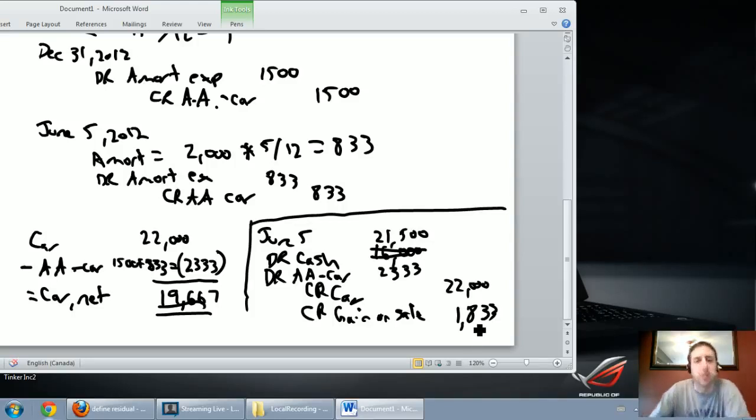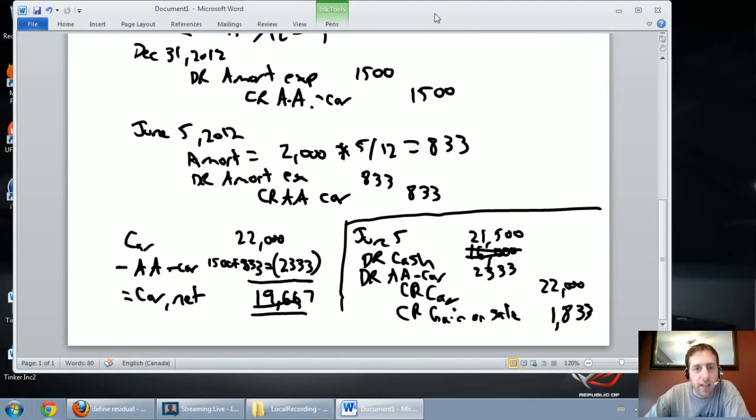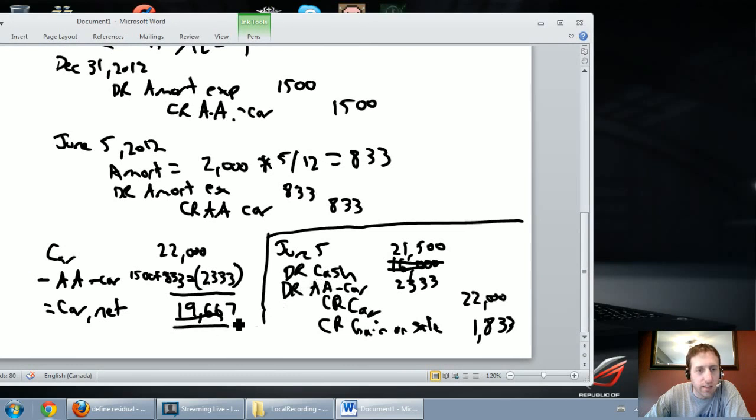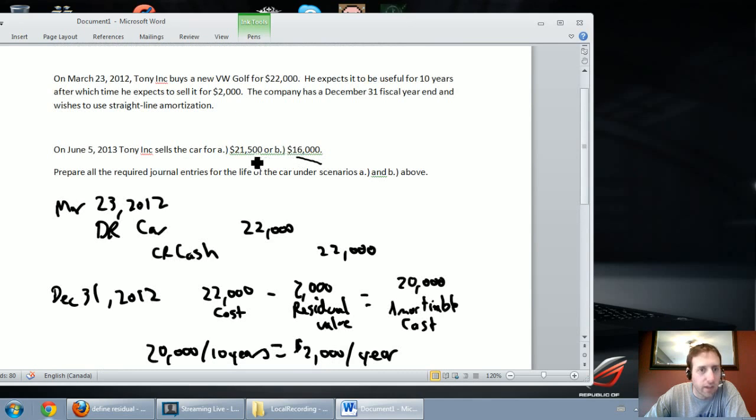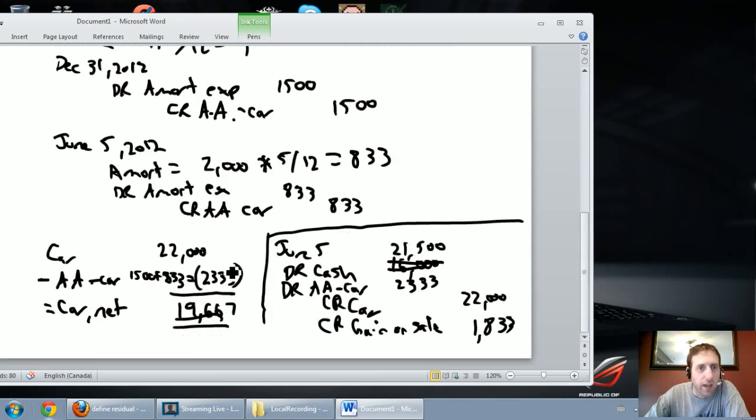So we gained 1833 on our sale. Now I hope you can see that looking at the numbers too. I had an asset on my books for 19,667, that's the value of it on my books, and I got paid $21,500 for it. I got paid $21,500 for something that was worth 19,667. I'm $1800 to the good. I have a gain on sale of $1833. Gain on sale is a revenue on the income statement. It's like an other revenue, so it's kind of a weird revenue, but it is a type of revenue on the income statement. That's it for the gain.